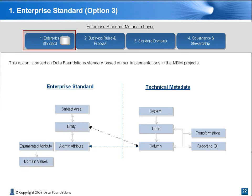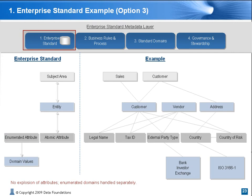The third option displays a model we have seen work successfully, and that also avoids certain issues inherent in options one and two. It is a homegrown standard that Data Foundations has implemented. The key is to get both definition and representation reused as much as possible, create relationships as relevant, provide for a single column to be decomposed into multiple attributes and vice versa. There is no explosion of attributes, enumerated domains are handled separately, and the data integration is seamless. Any of the options can be effectively used, or other options that might work better in your organization can be chosen. The key is system-independent — that's the main point — as well as a reusable metadata standard.